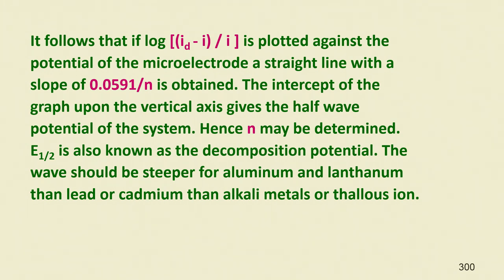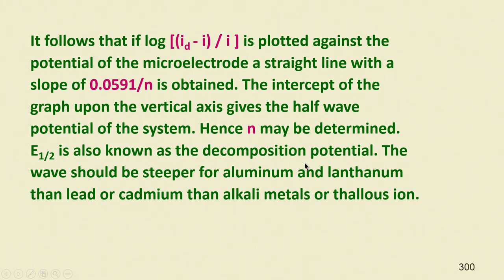This can be recorded and has been recorded for many elements including organic species which can be reduced or oxidized. n can be determined simply by the slope of the calibration curve. E_half is also known as the decomposition potential. The wave should be steeper for aluminum and lanthanum than for lead or cadmium, and steeper than for alkali metals or thallous ion.